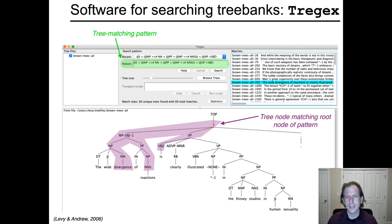We'll stop for now and continue with more information about context-free grammars — what kinds of structures are common and rare, and what we might want to do to account for human language abilities with them.